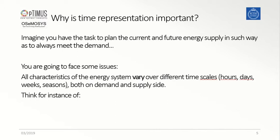The main objective of energy system planning is to ensure that in the long-term future, the supply side of an energy system will develop so as to always satisfy the evolution of the demand. In this planning activity, there are some issues to be considered that are linked to the fact that both demand and supply sides of the energy system vary in their evolution across different time scales.